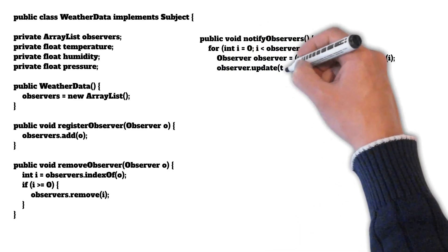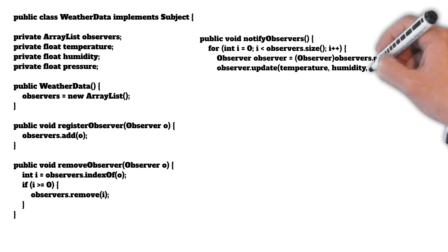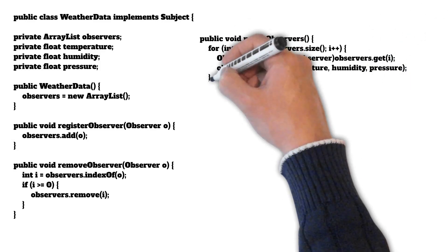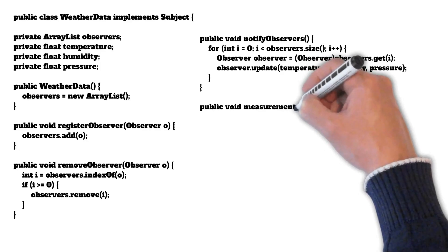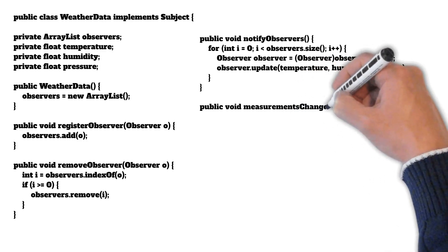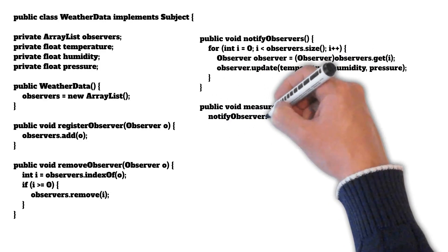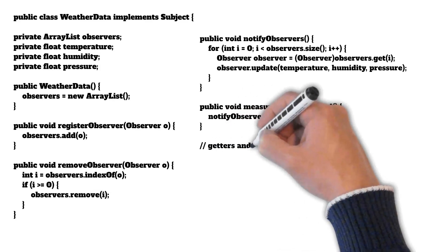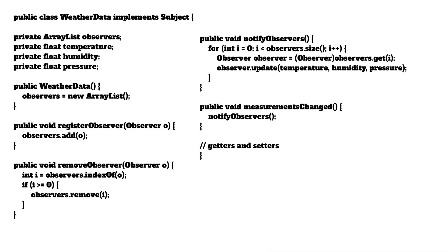For every observer, the update method is called. The measurementChanged method is called externally whenever the values of temperature, humidity, and pressure are changed, and inside measurementChanged we call our notifyObservers method.